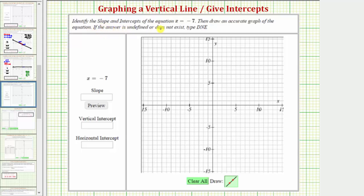We're asked to identify the slope and intercepts of the equation x equals negative seven, then draw an accurate graph of the equation. Let's actually begin by graphing x equals negative seven.